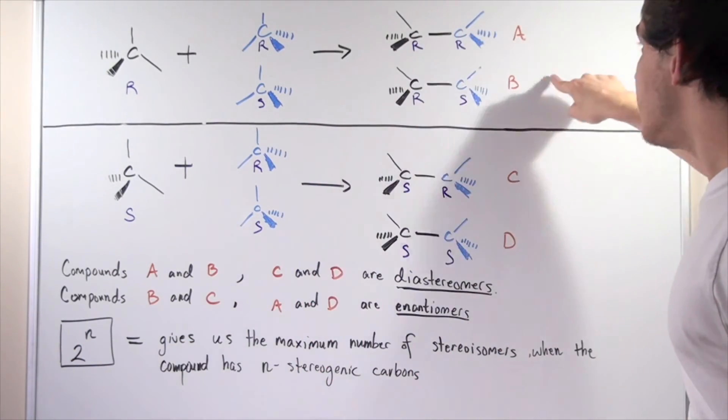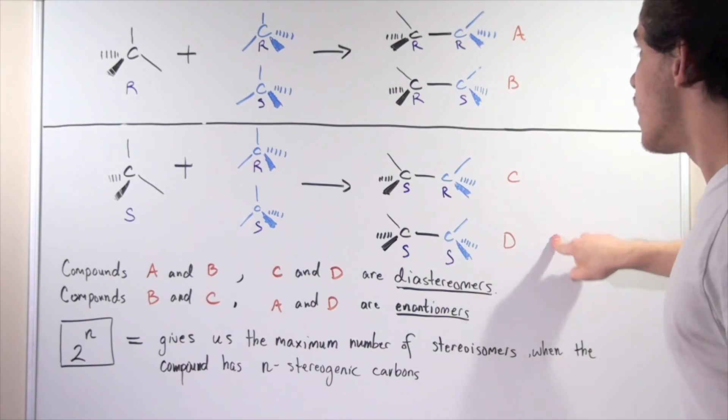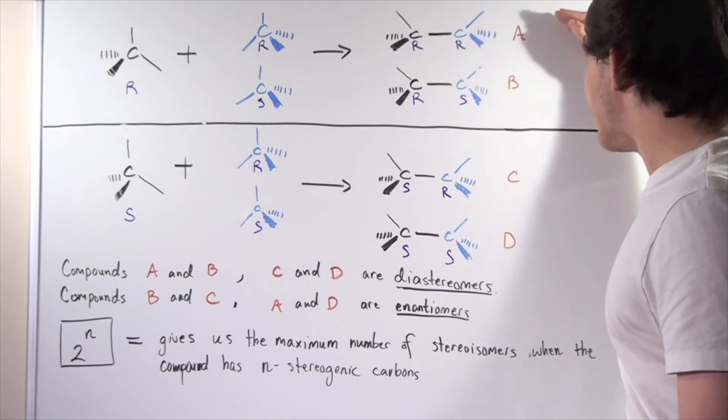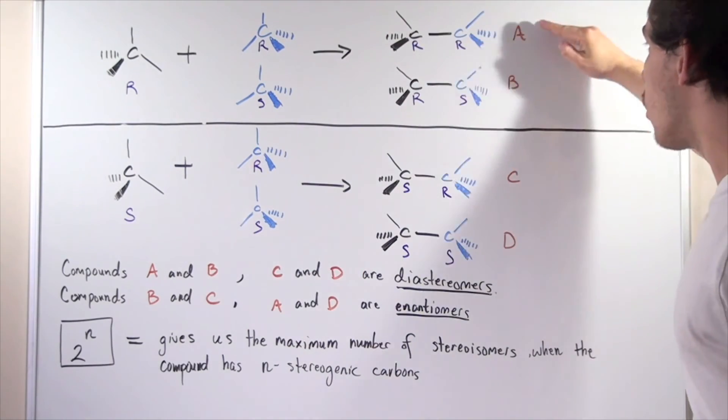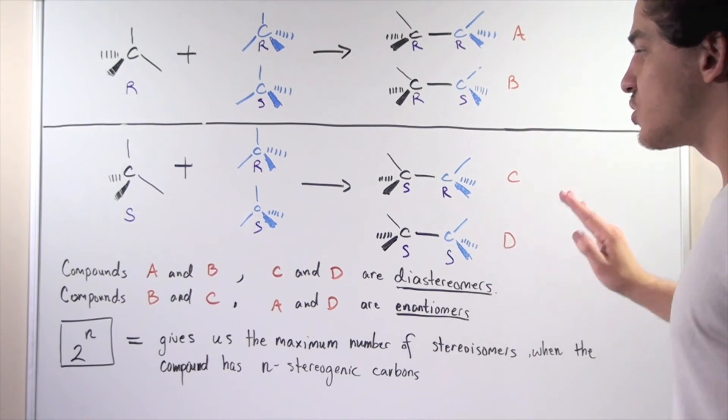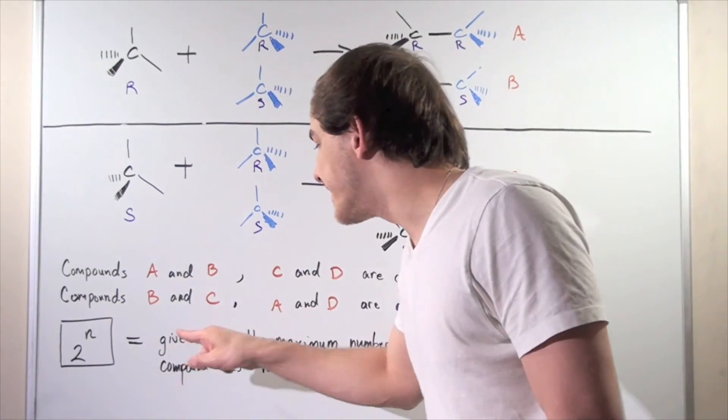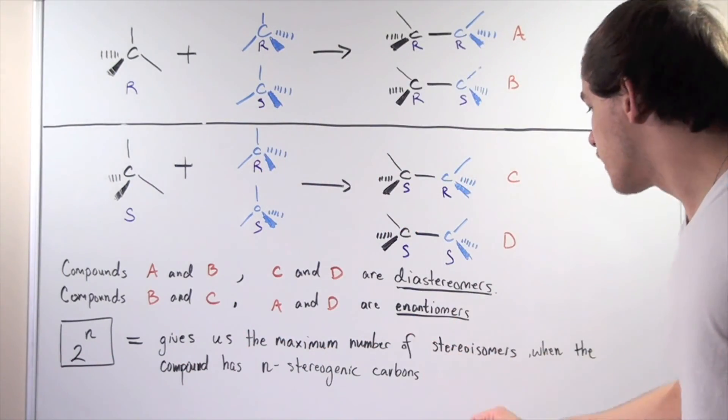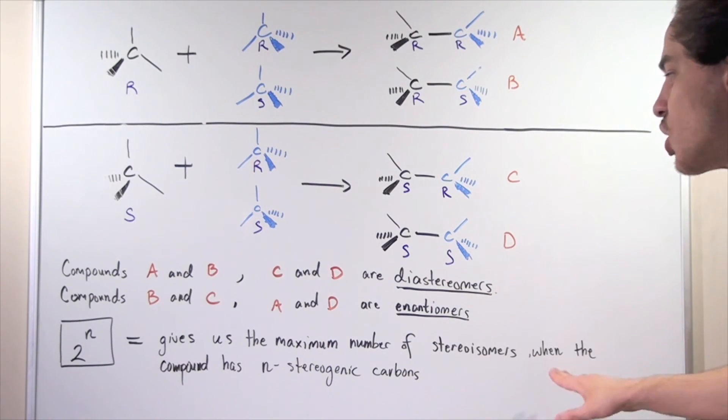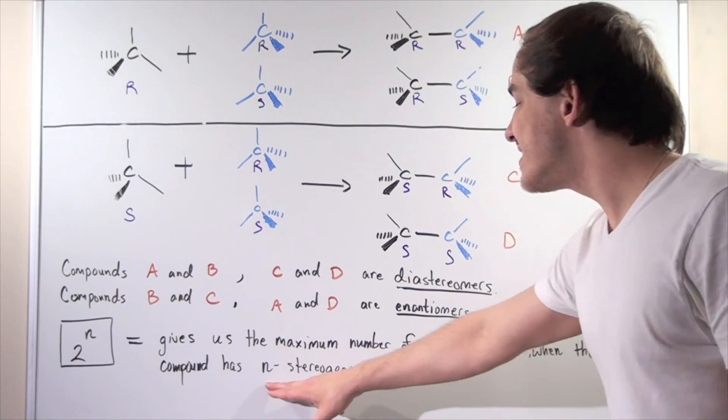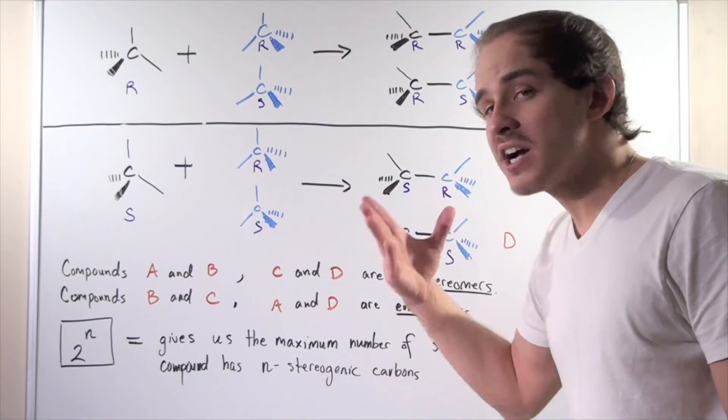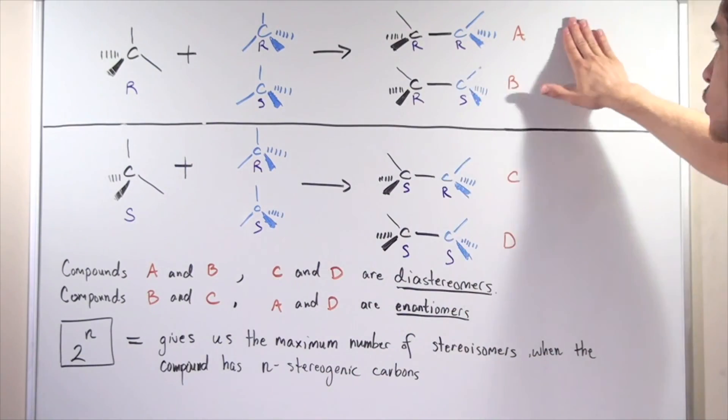And that gives us four different possibilities for this compound, like we saw here. We got four different possibilities. So once again, this formula gives us the maximum number of stereoisomers when the compound has n stereogenic or chiral carbons, as we saw here.